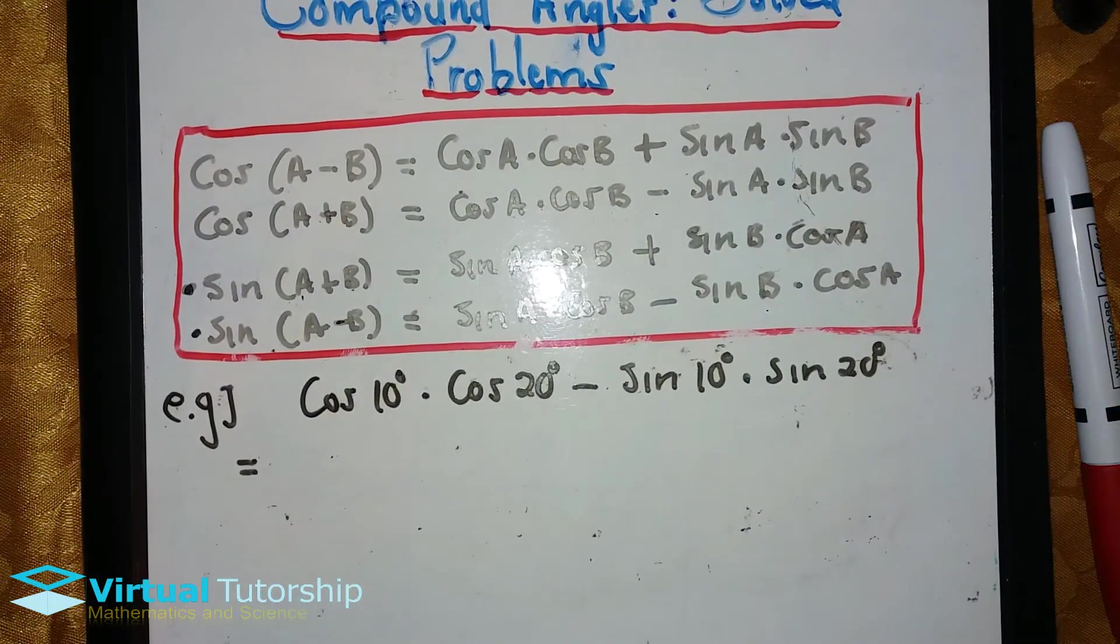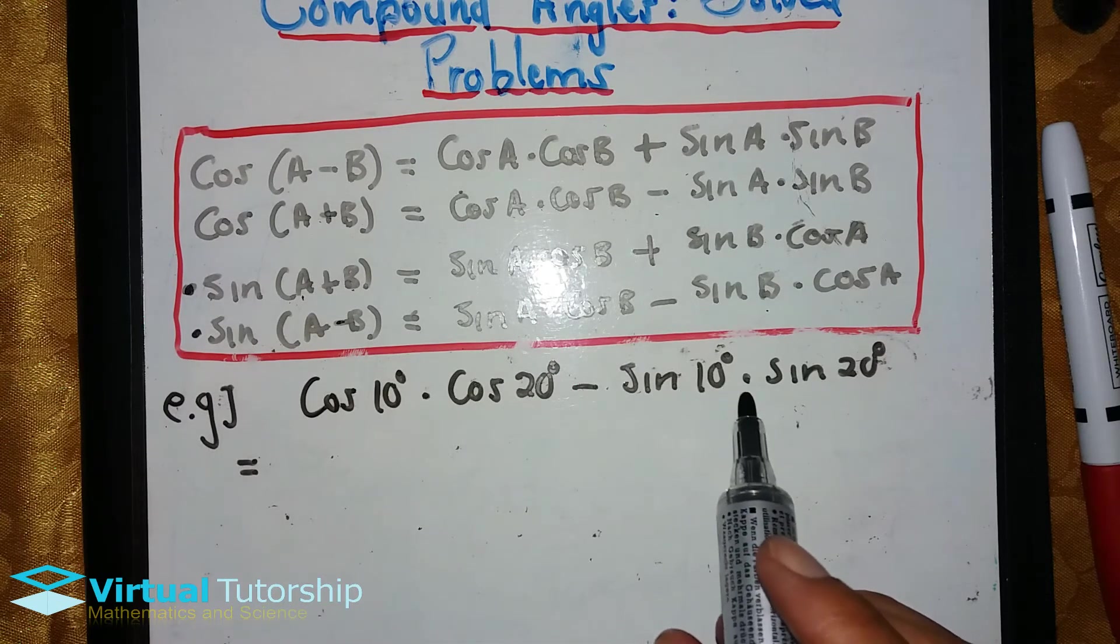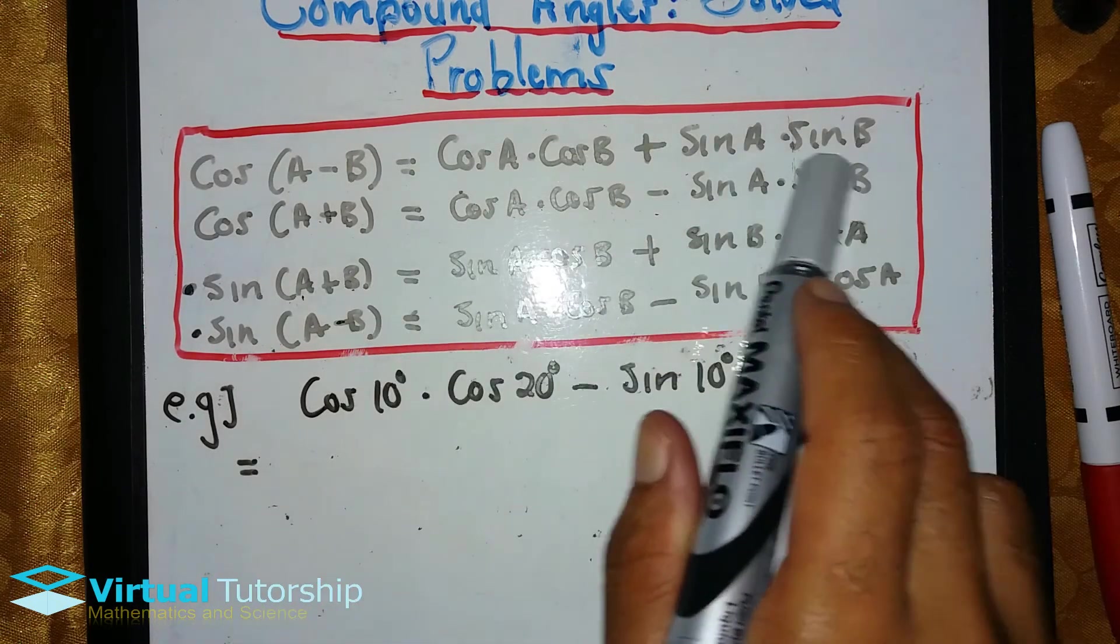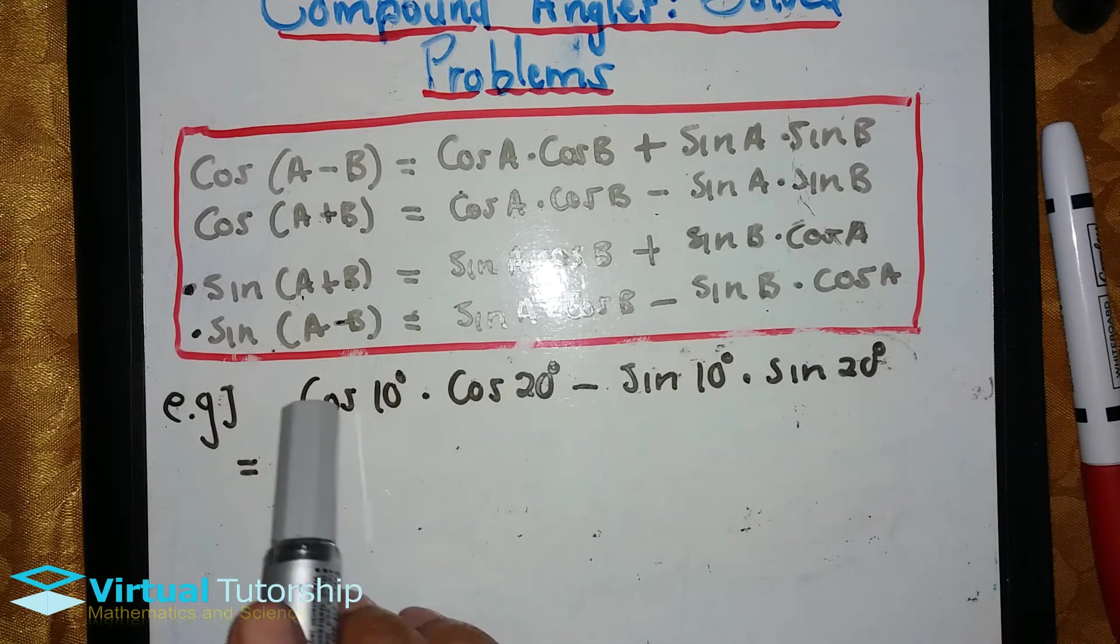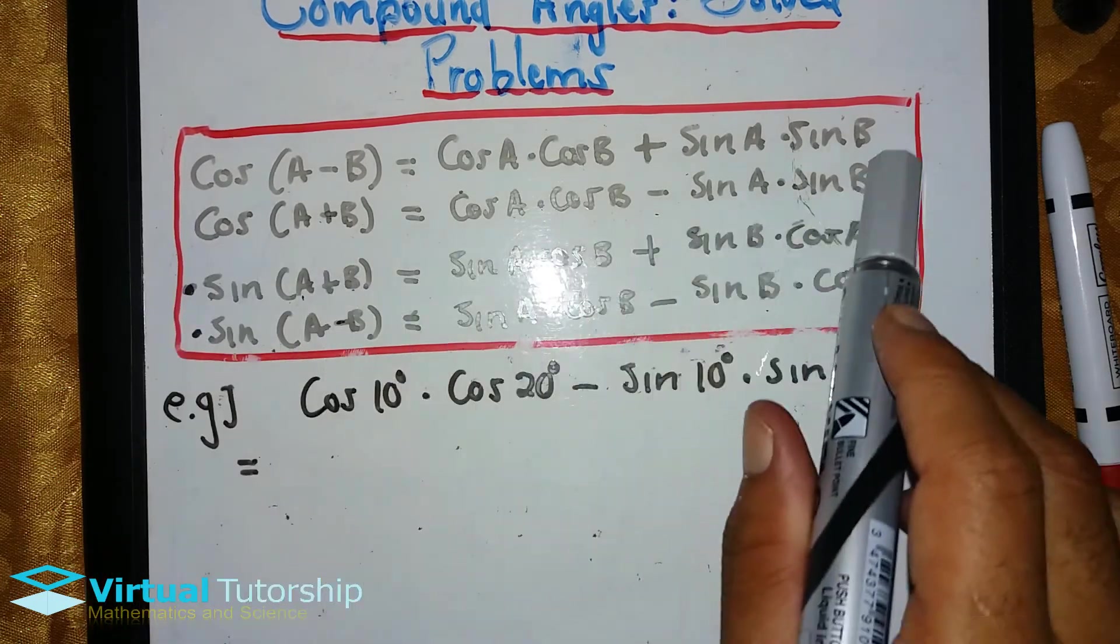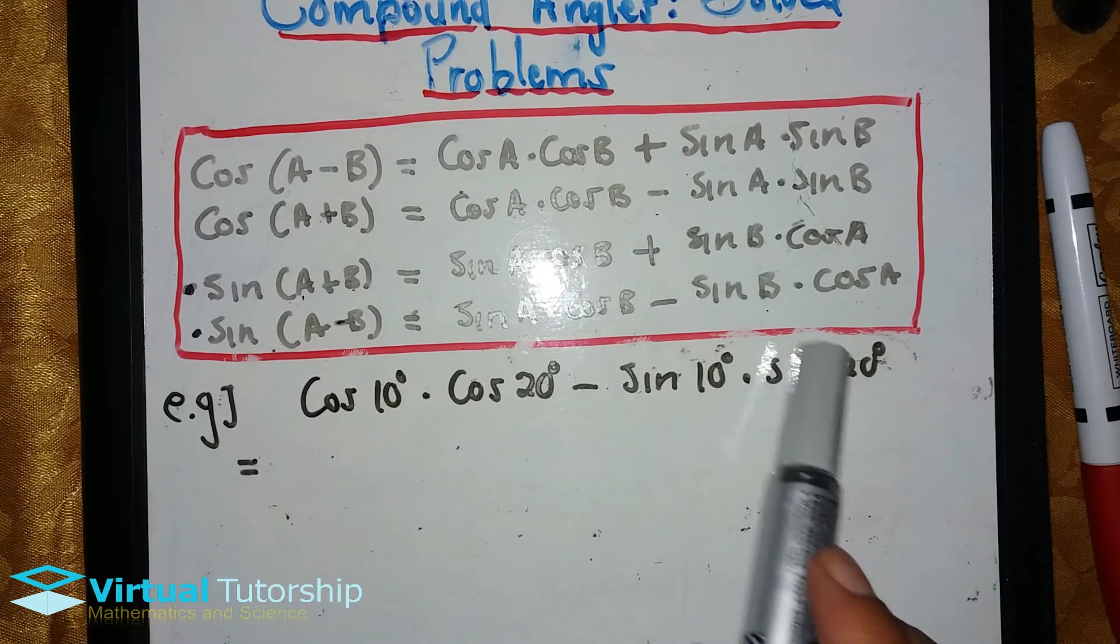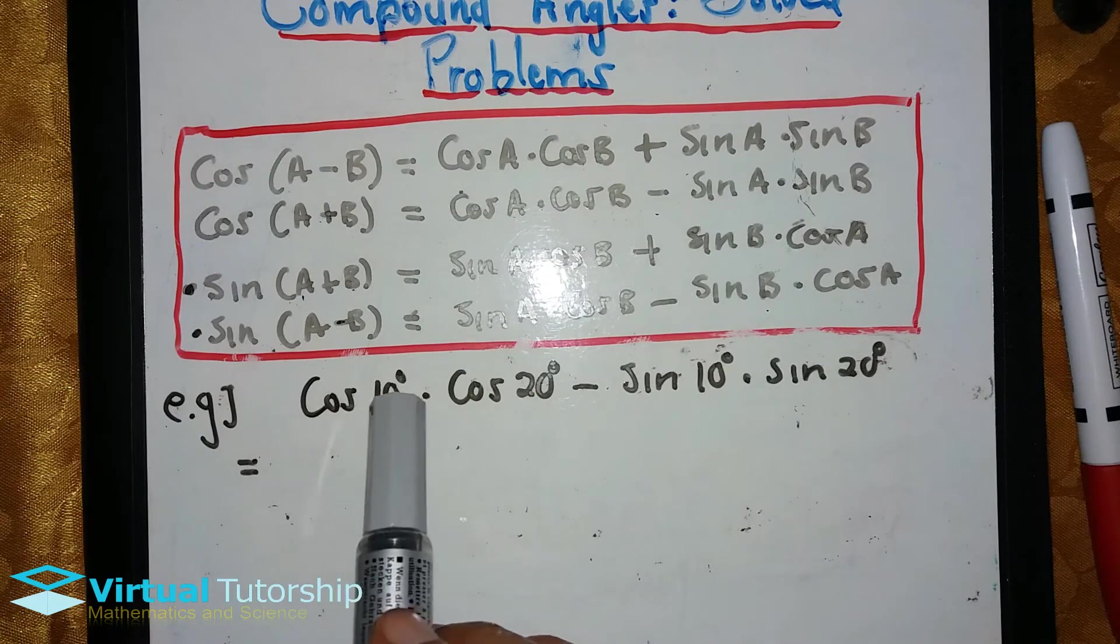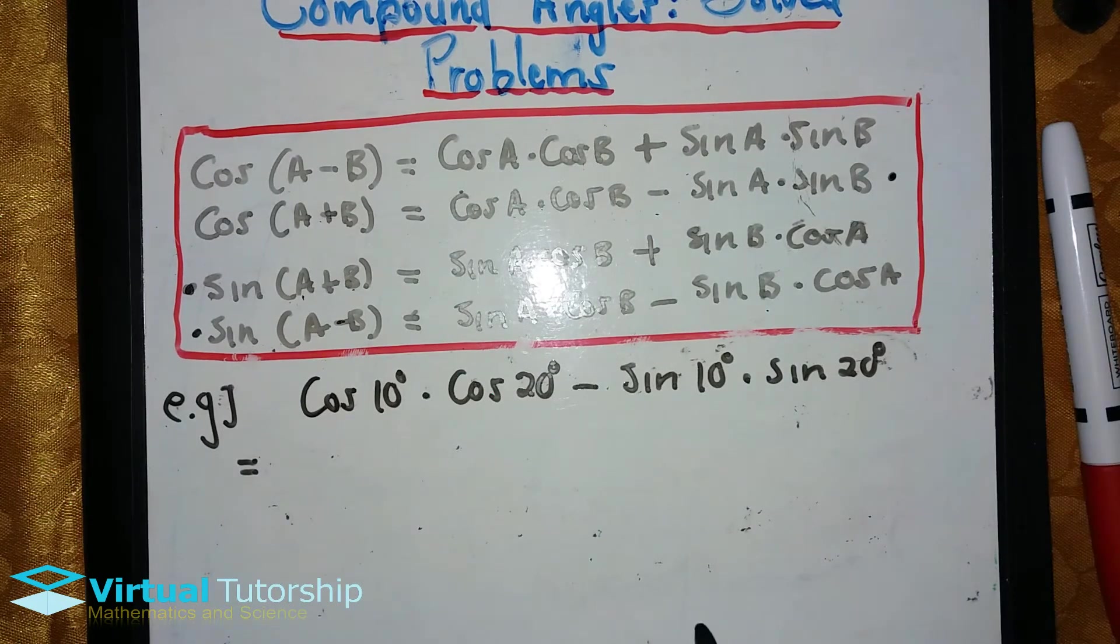Alright, now in this example, we have cosine 10 degrees times cosine 20 degrees minus sine 10 degrees times sine 20 degrees. This is a compound angle, but then the right hand side of one of our formulas. So we must look back from the above formulas. The compound angle: sine has cosine cosine minus sine sine. It's cosine cosine minus sine sine, so this is a cosine compound angle. But then we need a cosine compound angle with a minus in between. So this is the one.